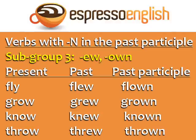Subgroup three: verbs ending in EW in the past and OWN in the past participle. Fly, flew, flown. Grow, grew, grown. Know, knew, known. Throw, threw, thrown.